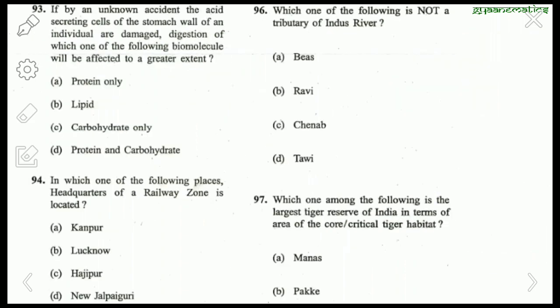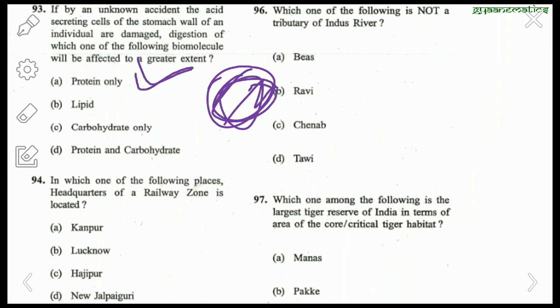If the acid-secreting cells of the stomach walls are damaged, digestion of which biomolecule is affected to a greater extent? Proteins are the biomolecules digested in the stomach due to gastric acid, so the right answer is protein. Lipids are digested by lipase in the small intestine; digestion of carbohydrates starts in the mouth. So the right answer is protein.